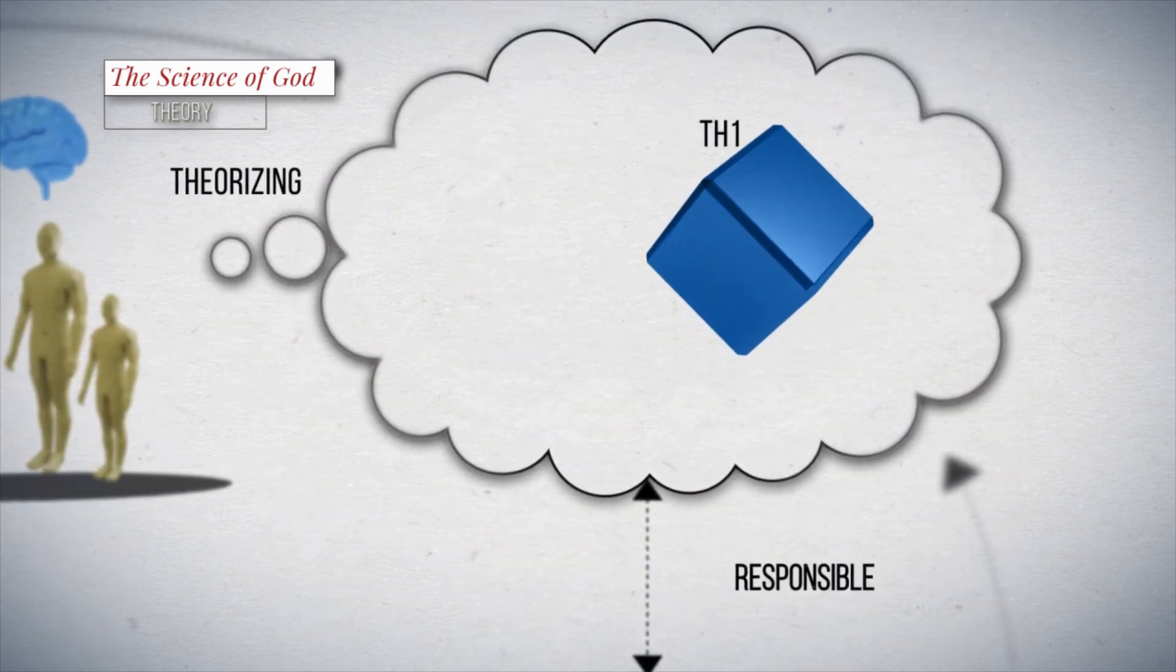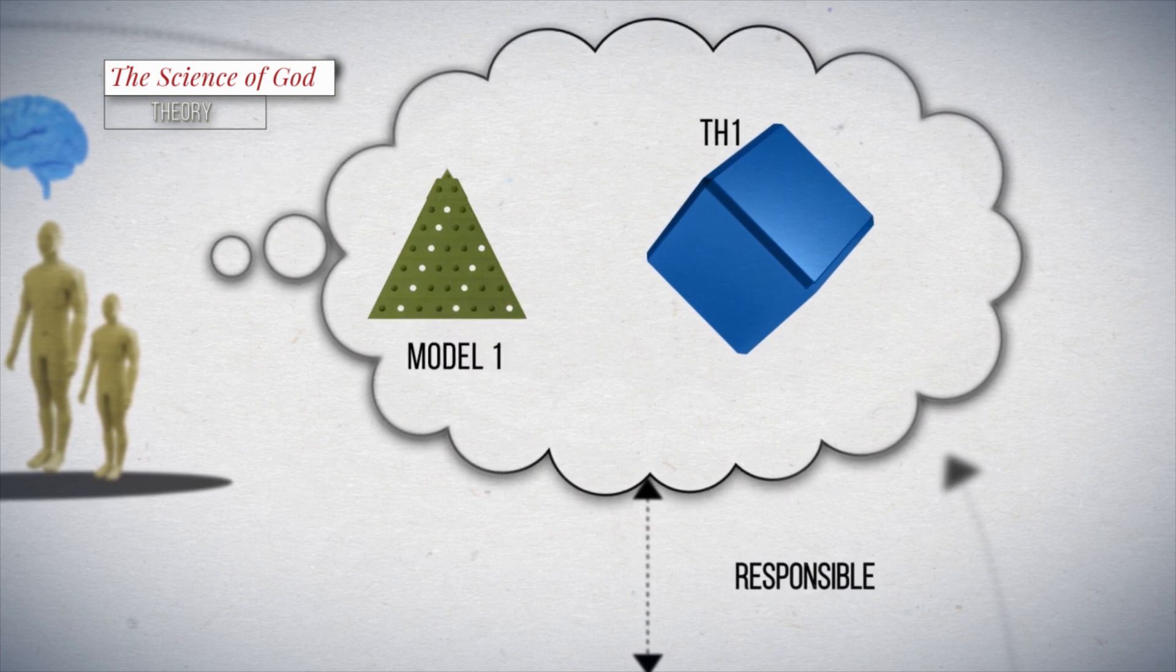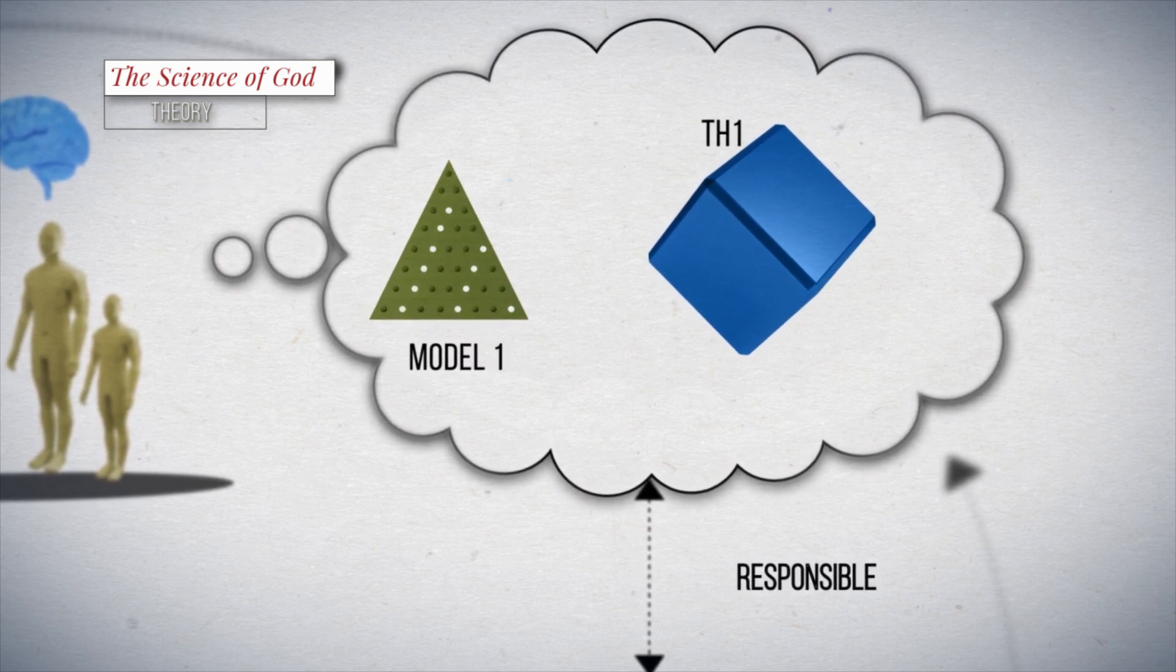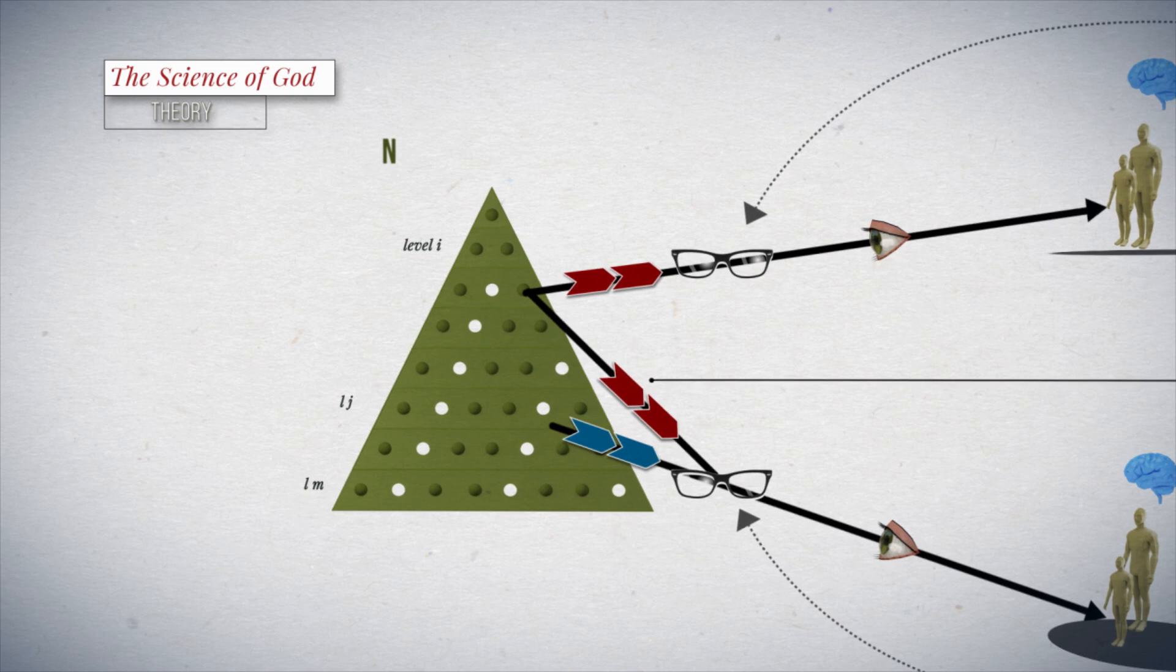According to McGrath, theorizing seeks this explanatory responsiveness through the modeling of reality, being this process inherently a reduction of the observed complexity.